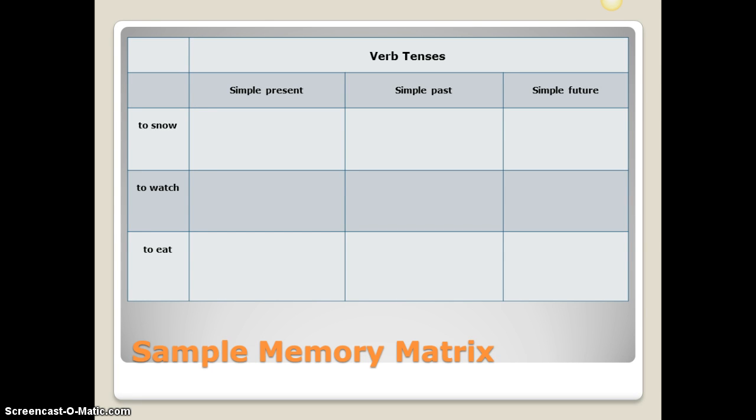The purpose of the Memory Matrix is to assess student recall of important course content, and their skill at quickly organizing that information into pre-determined categories. By using this technique, teachers can quickly see not only whether their students have memorized the basic information, but also how well they have organized that information in their memories.